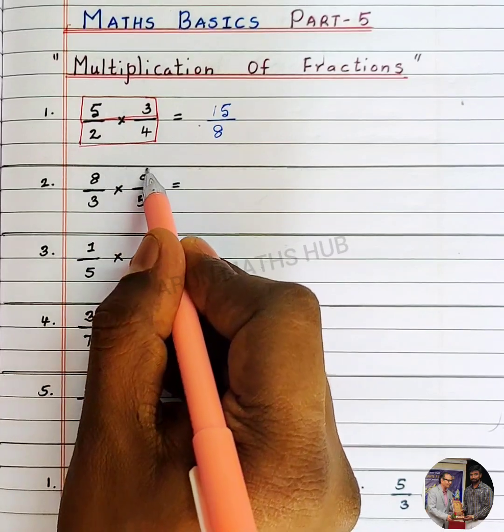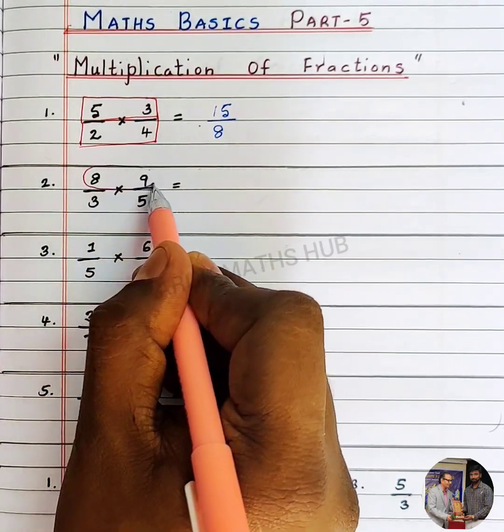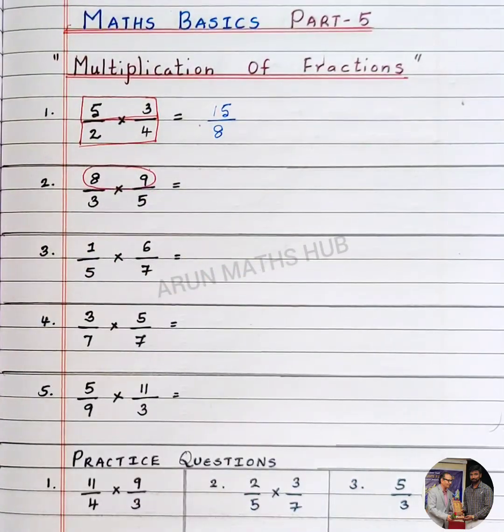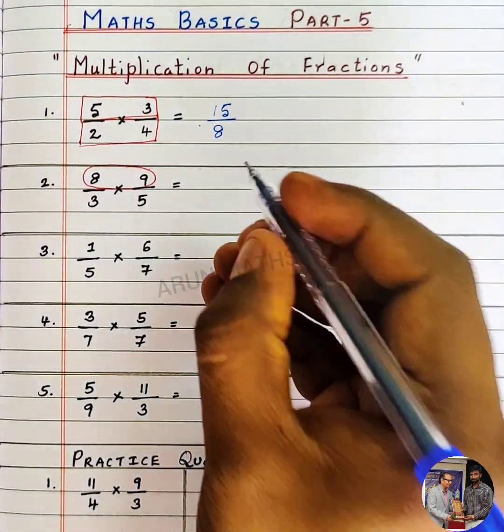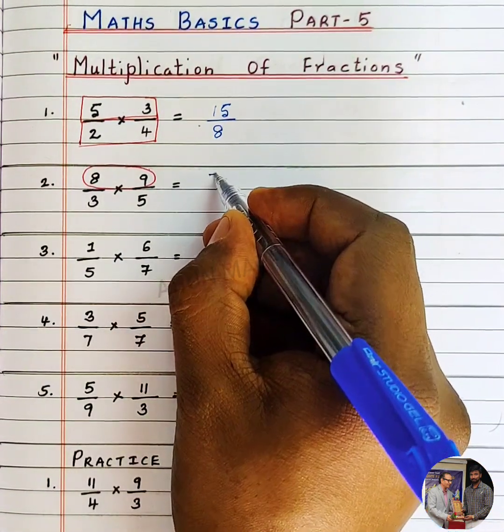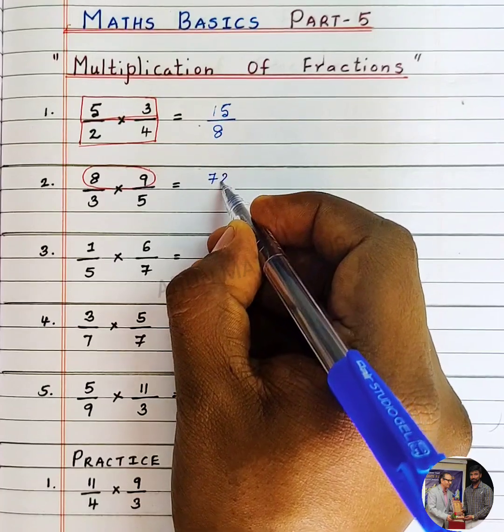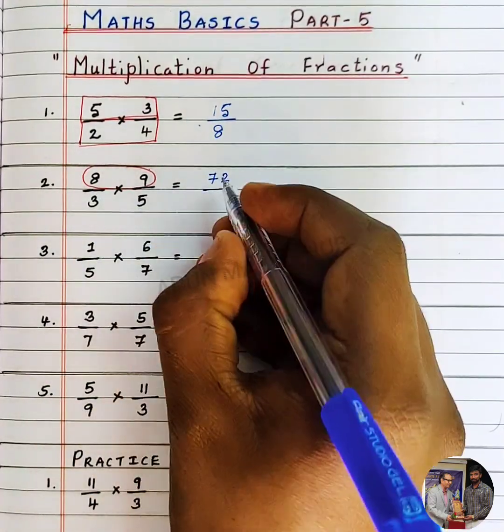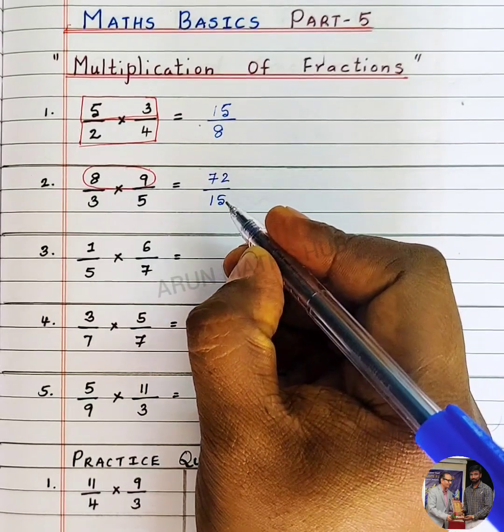In the same way, multiply the numerators. 8 9s are 72 divided by 3 5s are 15. Still, you can simplify further.